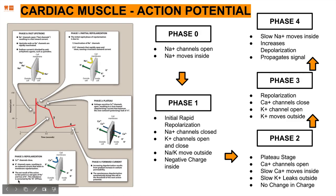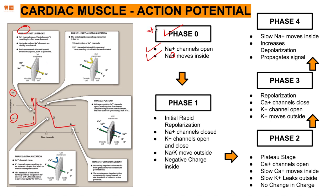Phase zero: sodium channels open up and sodium moves inside the cell. There is a spike in the graph — from negative millivolts all the way to positive millivolts — because sodium has a positive charge. It increases the intracellular charge very quickly and that propagates the signal. This is the beginning of the signal. Phase one is initial rapid repolarization — bringing down that spike. Sodium channels close and potassium channels open and close, so potassium moves outside and a negative charge is created inside, compensating for the excessive positivity of sodium.